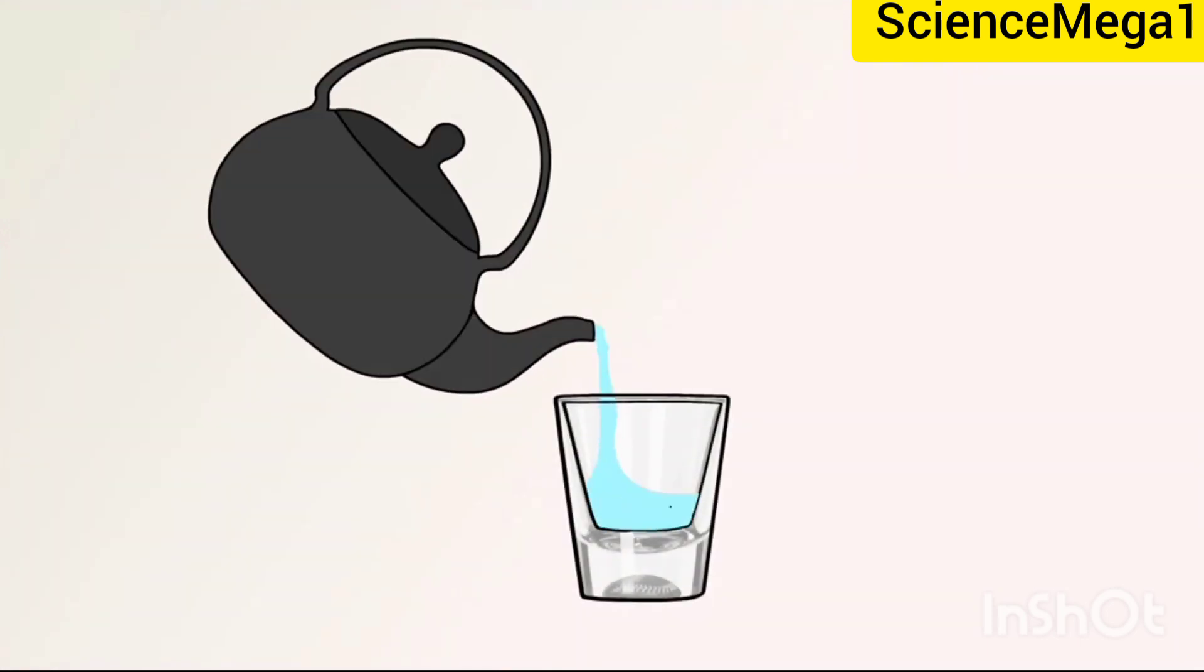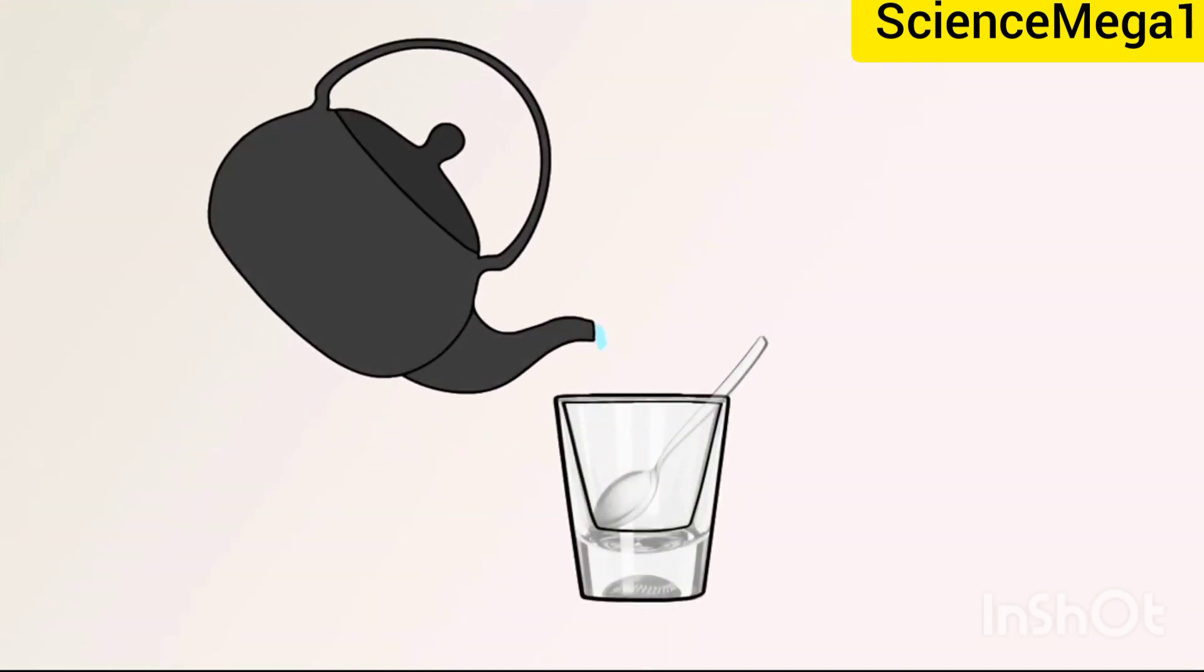When hot water is poured in a thick glass tumbler, the tumbler may crack due to uneven expansion across the glass sides. In order to prevent the tumbler from cracking, a metal spoon is placed inside it before the hot water is poured into it, as shown on your screen. And I hope you are observing those diagrams carefully.